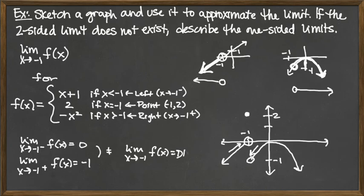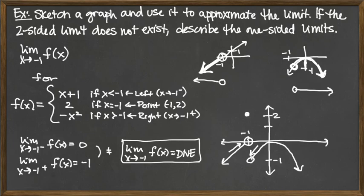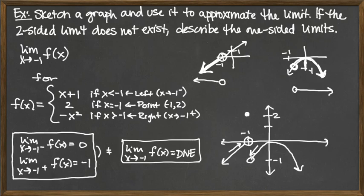Since the left-hand and right-hand limits don't equal each other, the two-sided limit as x approaches negative 1 does not exist — DNE. The question asked us to sketch the graph and approximate the limit. The limit does not exist, and if it doesn't exist, we describe the one-sided limits. We already found those in order to determine the two-sided limit.